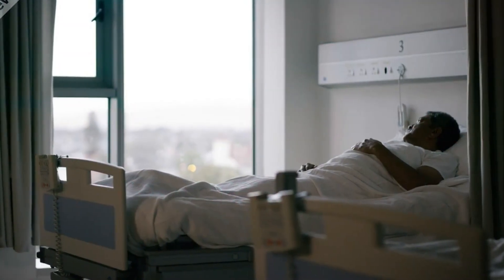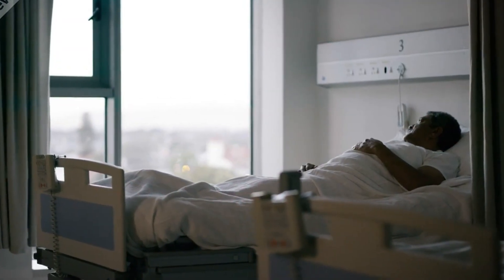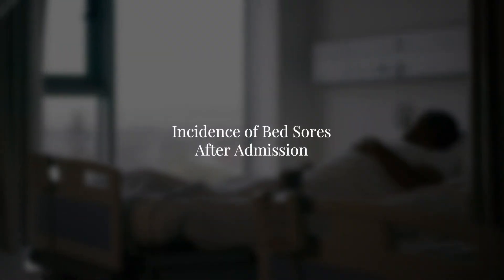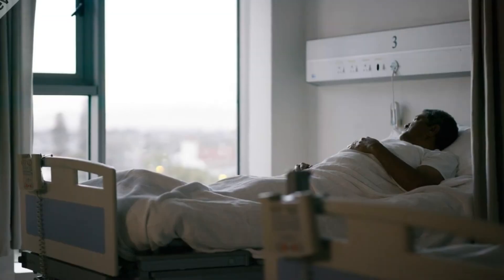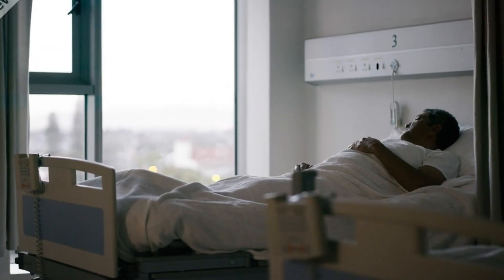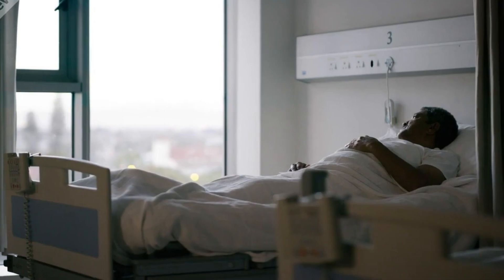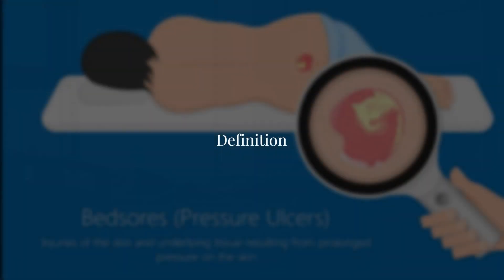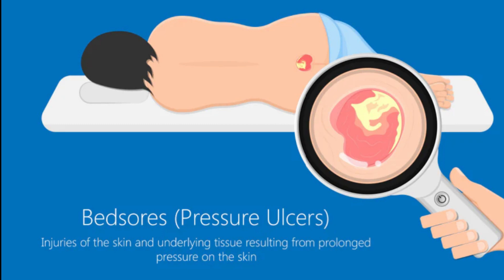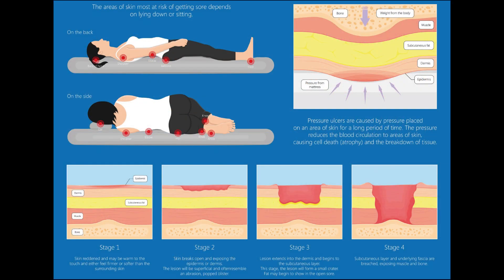Quality Indicator No. 37: Incidence of bed sores after admission. Indicator Type: Outcome Related. Definition: A pressure ulcer is a localized injury to the skin and/or underlying tissue, usually over a bony prominence, as a result of pressure or pressure in combination with shear and/or friction.